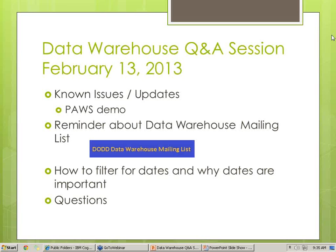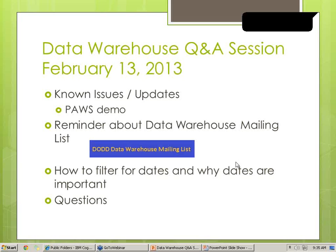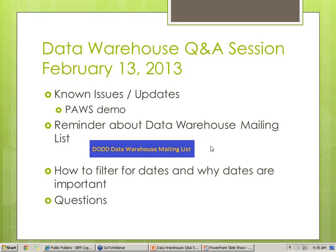I want to do a reminder about the data warehouse mailing list. If you see a message with the subject line 'data warehouse mailing list' or with a blue graphic at the top, know that it's a mailing list message. I've had responses where people thought it was sent directly to them, but I'm just sending it to the listserv. I'm going to always put that in the subject line with the date, and always put the graphic at the top, so you'll know it was a listserv message and not something sent directly to you.